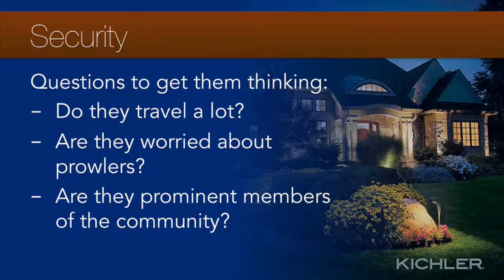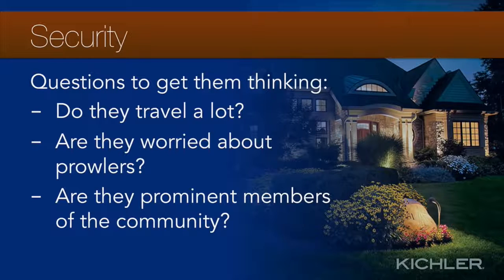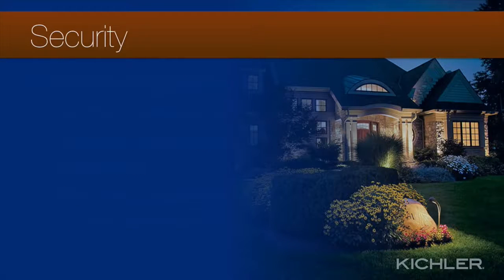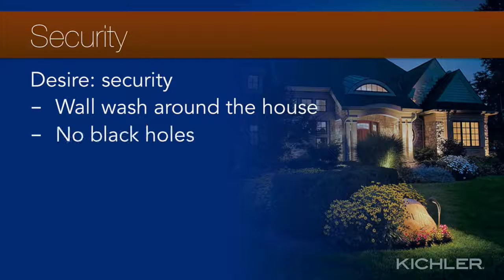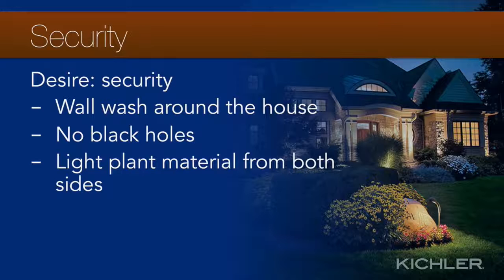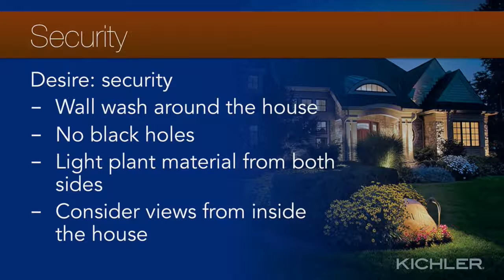Here are some questions to ask that get customers thinking about security: Does the client travel a lot? Are they worried about prowlers? Are they a prominent member of the community and therefore in need of extra security? Identifying security concerns can help make the case for an expanded lighting system that covers the entire property, not just the front of the house. The key to providing security is eliminating dark areas — wall washes create a reflective halo of light around the house, and lighting trees and plants from both front and back will eliminate shadowy areas.